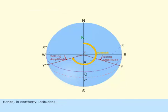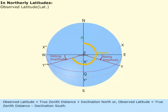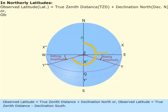Hence, in northerly latitudes, observed latitude equals true zenith distance plus declination north, or observed latitude equals true zenith distance minus declination south.